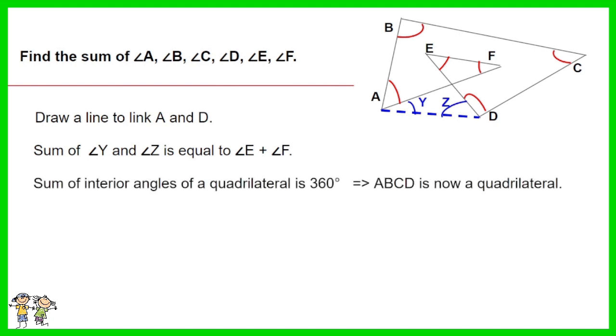Sum of interior angles of a quadrilateral is 360 degrees. ABCD is now a quadrilateral.